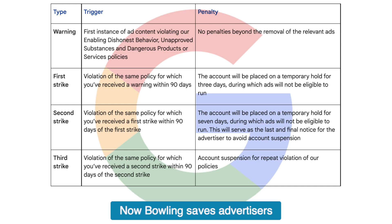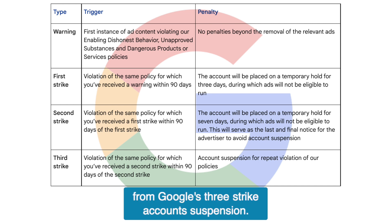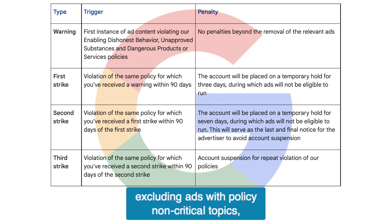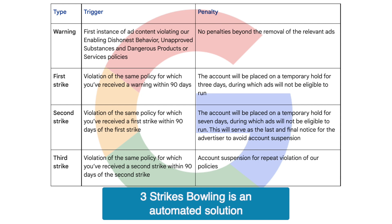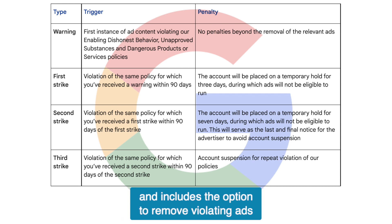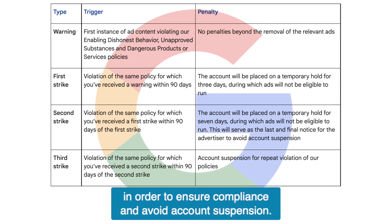Bullying saves advertisers from Google's three-strike account suspension. Three-strike bullying is a tool used to collect all disapproved ads — excluding ads with policy non-critical topics — in order to avoid account suspension. It's an automated solution which identifies and gathers all relevant disapproved ads and includes the option to remove violating ads in order to ensure compliance and avoid account suspension.